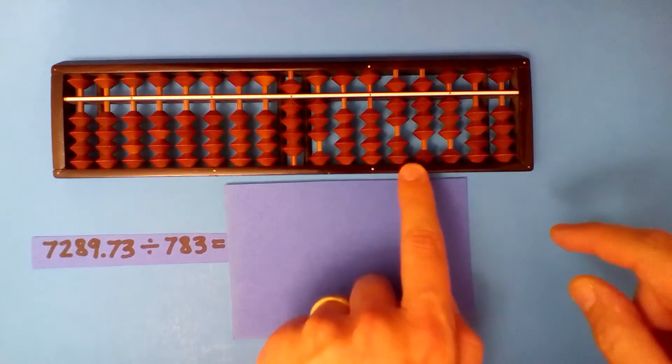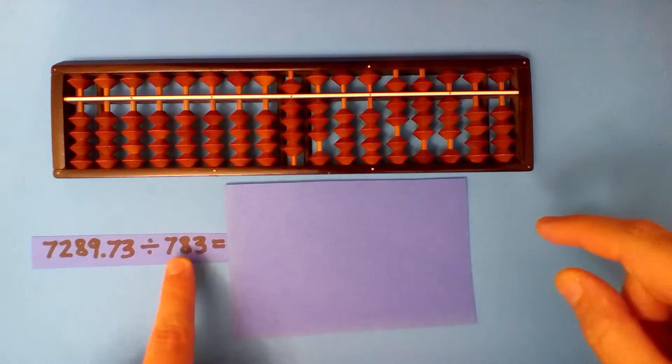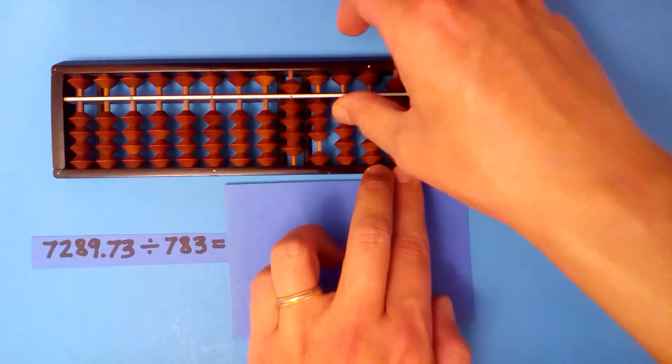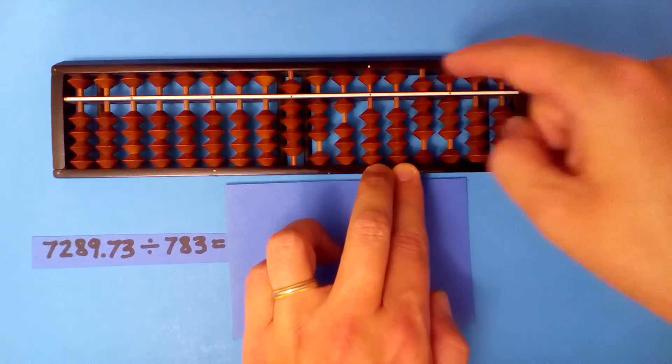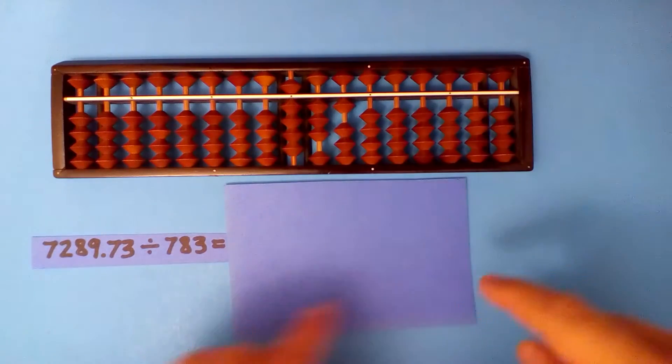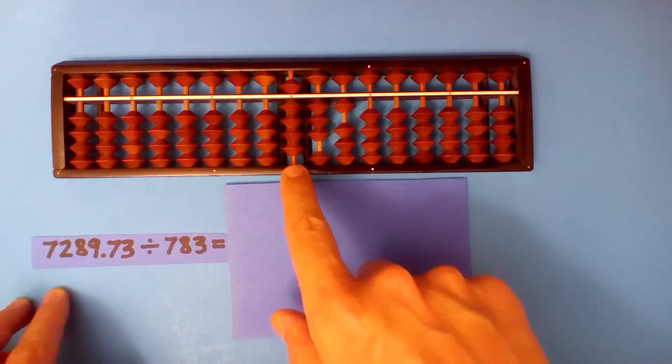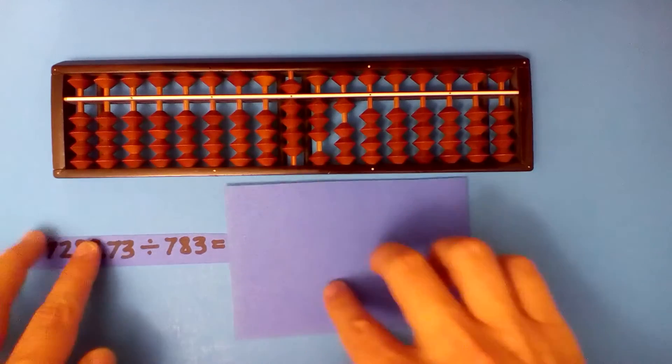And you can see 783, 783, so we know it goes once. One times seven, one times eight, one times three. And we're finished. Our quotient, 9.31.